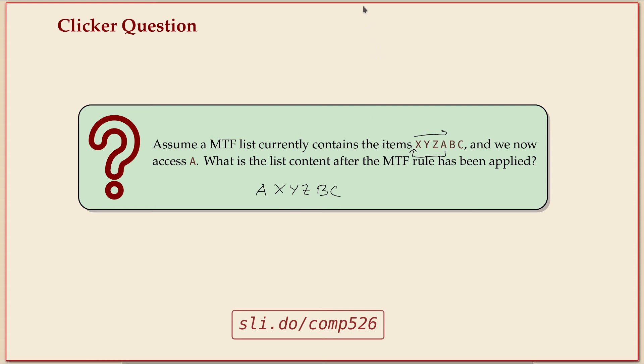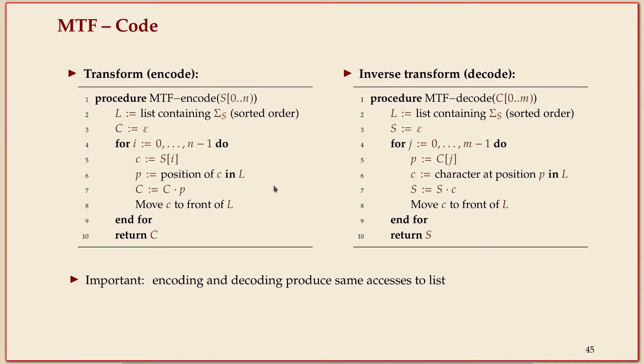That's the rule. This time because it's simple enough, here's the code. For encoding you start with the list containing the letters in alphabetic order, start with the empty string for the coded text, and then you go through each of the letters. You find the next character in the text, then you find the position of that character in the Move to Front list - that's the position P that is your code word. And then you move C to the front of the list. I didn't spell out the code for that but I guess you could imagine how to do that.